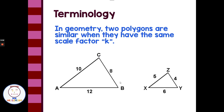The corresponding side CB lines up with ZY and has that same scale factor: 8 divided by 2 is 4. The third side gives us 12 divided by 2 is 6. So the scale factor from the large triangle to the small triangle is 0.5. Conversely, from the small triangle to the large triangle, the scale factor would be 2 — it'd be twice as large.